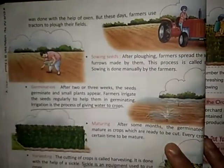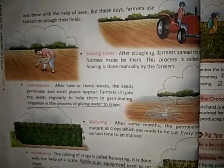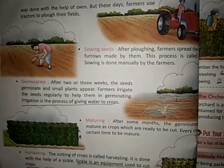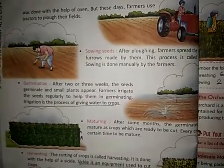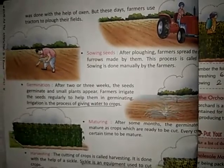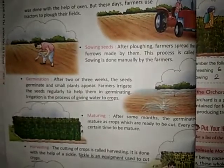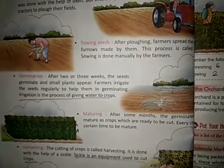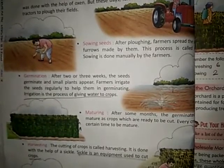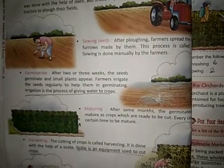Second is sowing. After ploughing, farmers spread the seeds in the furrows made by them. This process is called sowing. Third is germination. After two or three weeks, the seeds germinate and small plants appear. Then farmers irrigate the seeds regularly to help them in germinating. Irrigation is the process of giving water to crops.